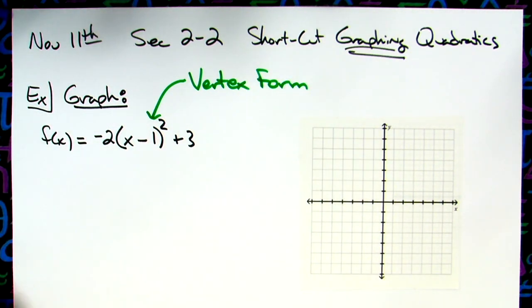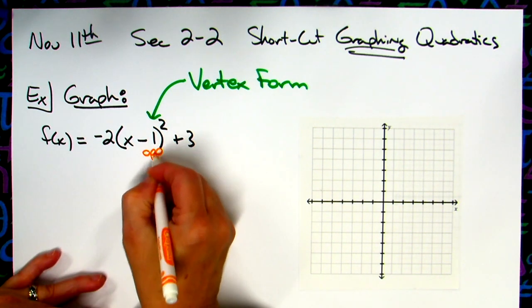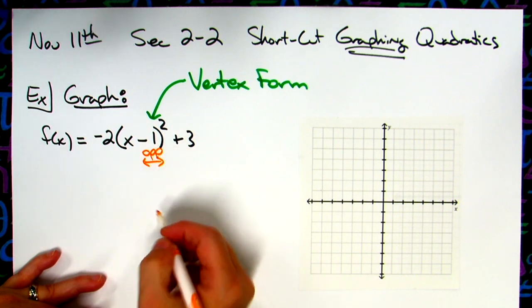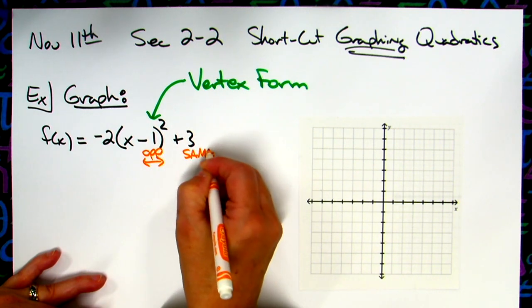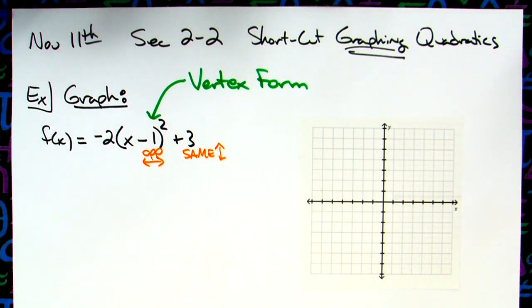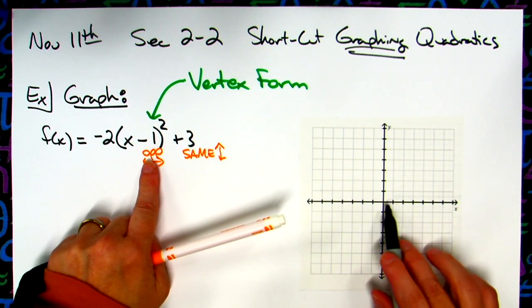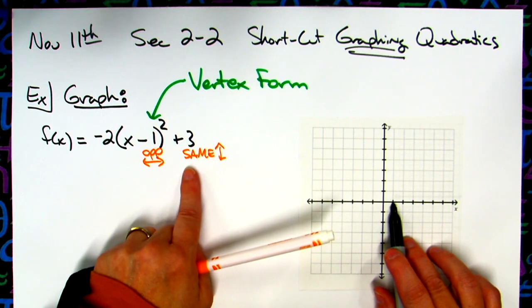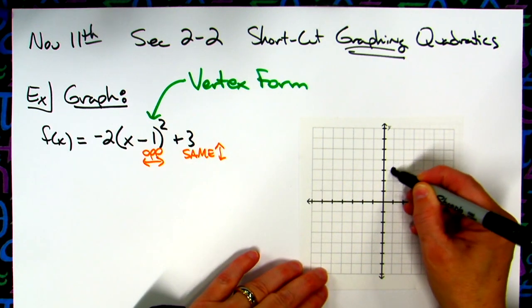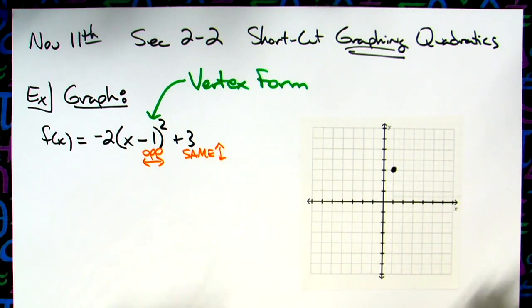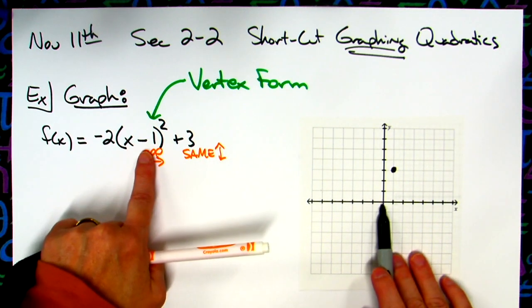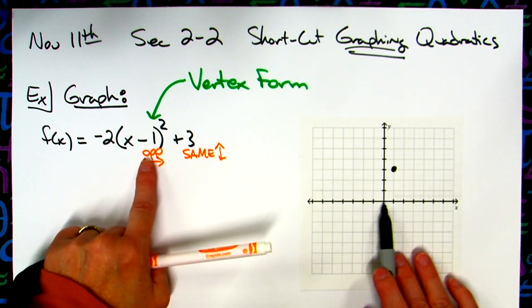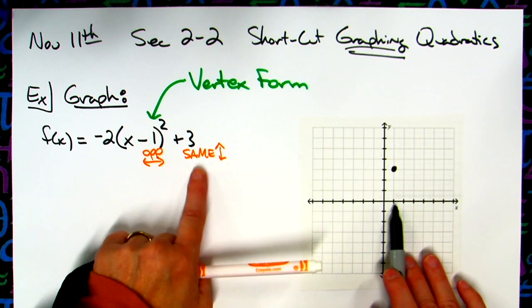We like vertex form, right? Because that means I can find the vertex in two seconds. We do opposite left or right with this number, and we do same up or down with this one. Remember, that's how our transformations of our functions went. We all remember this, right? Because this is pretty easy. So since it says negative one, I'm going to go to the right one, and then I'm going to go up three.